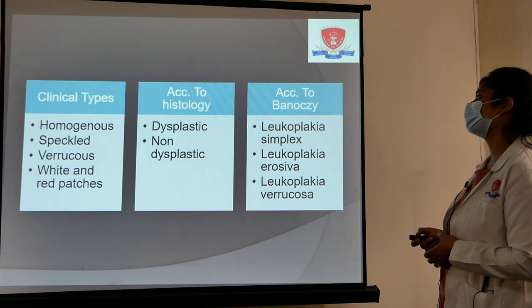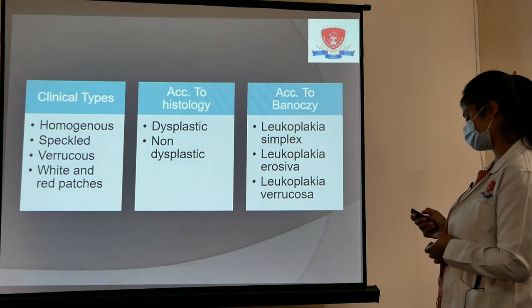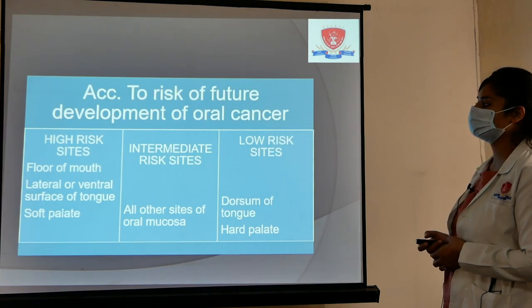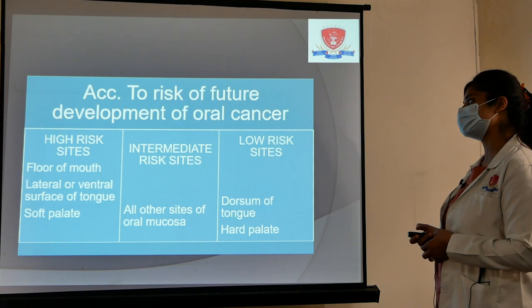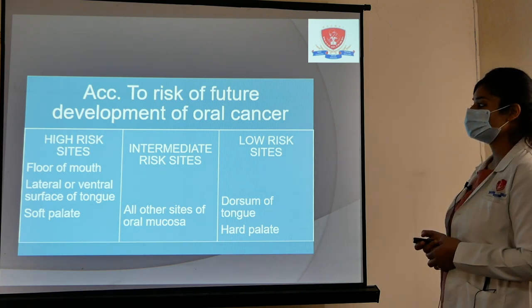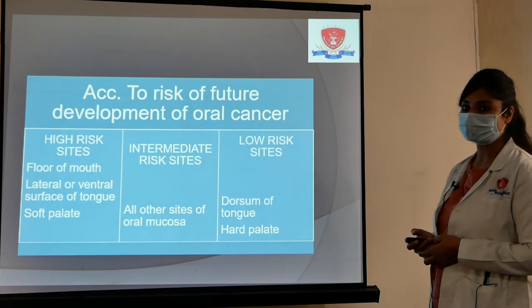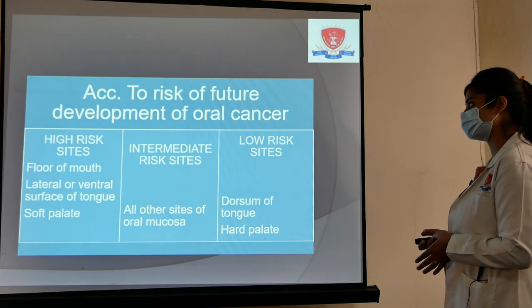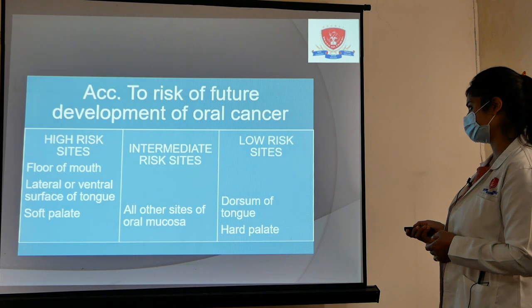According to risk of future cancer development, leukoplakia is classified into high risk, intermediate risk, and lower risk sites. High risk sites are the floor of the mouth, lateral or ventral surface of the tongue, and soft palate. Intermediate risk sites include all other sites of the oral mucosa. Lower risk sites are the dorsum of the tongue and hard palate.